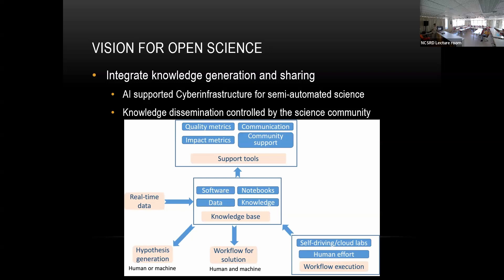The system could look at all knowledge and say: for this hypothesis, here's the workflow to solve it, with evidence quality levels. The machine could actually execute the workflow. For example, Toronto invested about $200 million in a self-driving lab where robots do experiments. The way science is done could change — the human may give scripts, but why not have an AI system give the scripts to run the experiment?